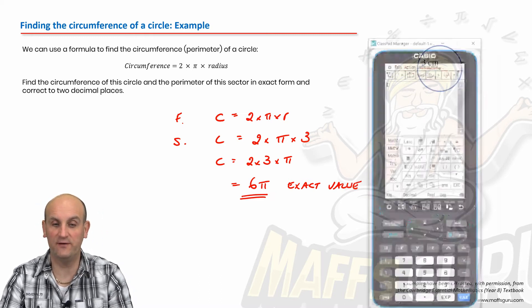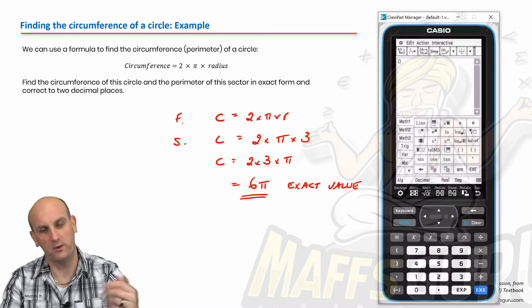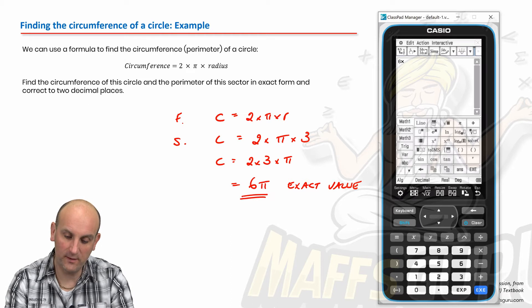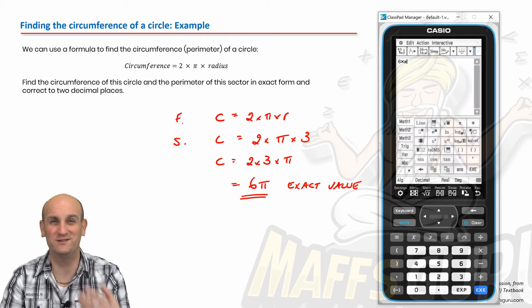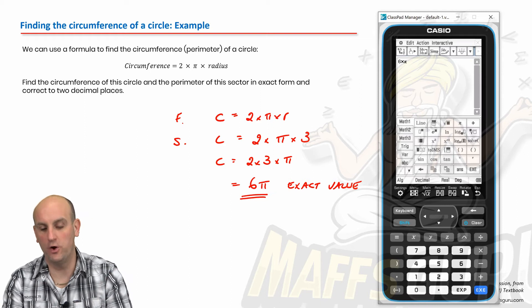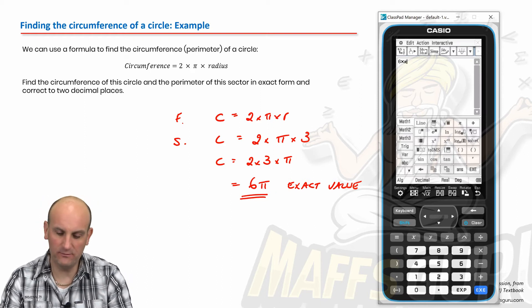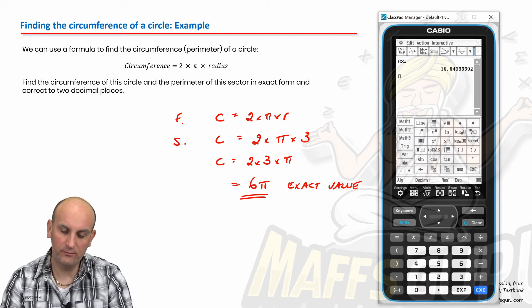Now, how do we go from an exact value to a decimal? We fire up my calculator. So doing that, I would now type in six times pi. Now, you may not have this type of calculator with you. You may just have a smaller sort of non-CAS. Doesn't matter. Same. You'll find the values or the buttons on there. And I press enter.